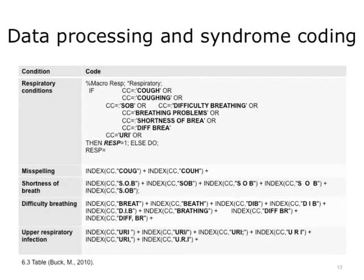Coding case definitions often entails scanning free text fields such as chief complaint or reason for visit for keywords indicative of a particular health condition. Since there are an infinite number of ways to record a health condition in a free text field, programming must be done to find likely cases. The code shown is taken from NYCDOHMH's syndromic macro, which attempts to capture as many different ways a respiratory condition might appear in the chief complaint field — for example, cough, shortness of breath, difficulty breathing, or URI for upper respiratory infection. Misspellings must be coded as well as variations and abbreviations.